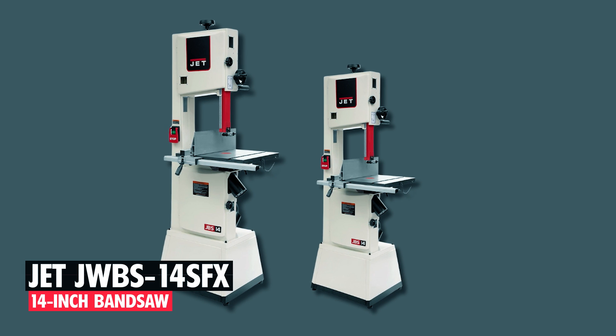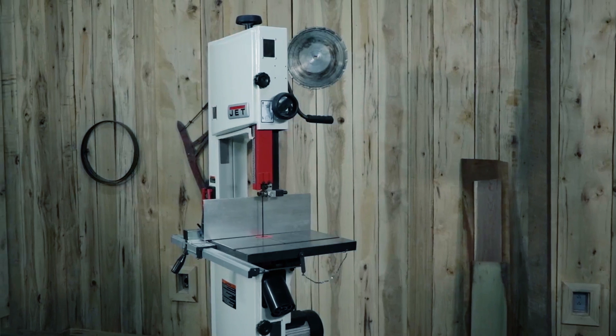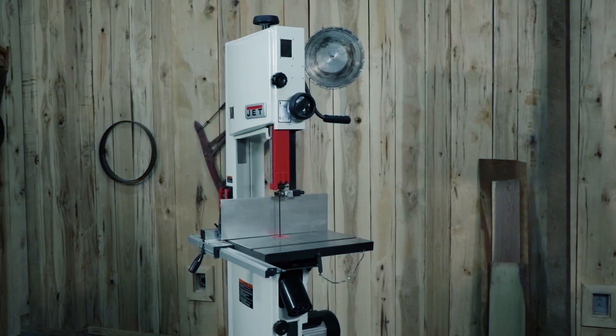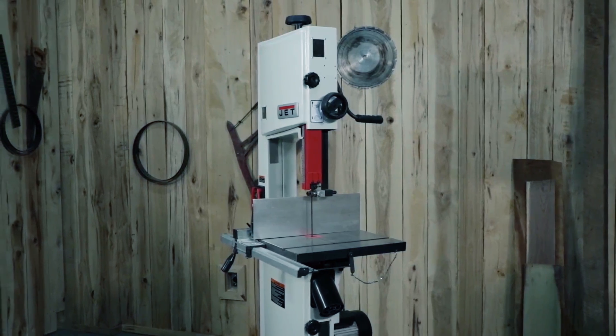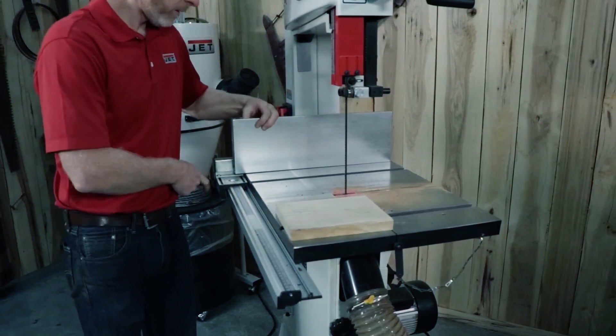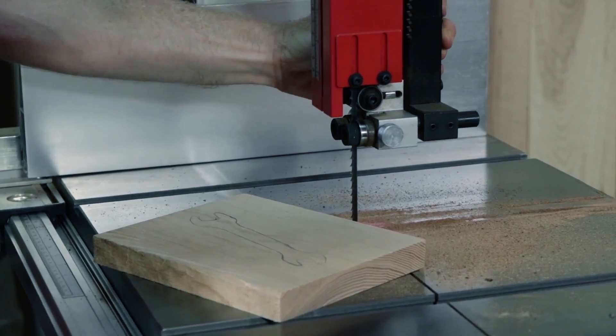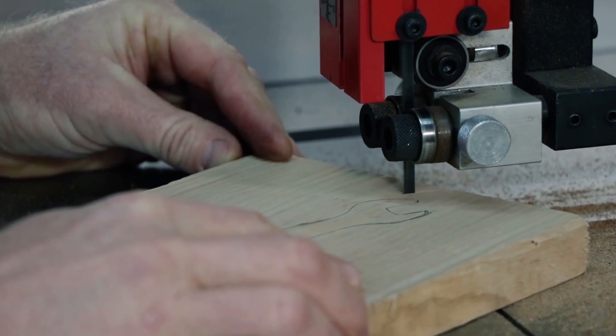Jet JWBS-14 SFX 14-inch Bandsaw. The Jet JWBS-14 SFX 14-inch Bandsaw strikes a balance between functionality and affordability, catering to woodworking enthusiasts of all levels. With a spacious cast-iron worktable, 13-inch re-saw capacity, and a machined aluminum fence system, it handles diverse projects with precision.